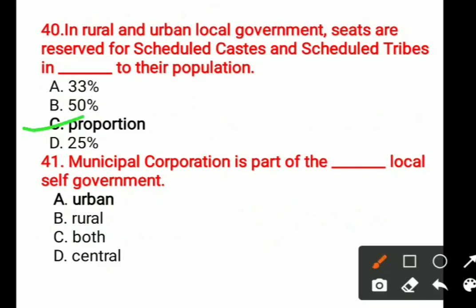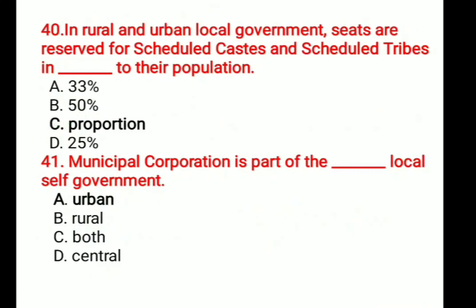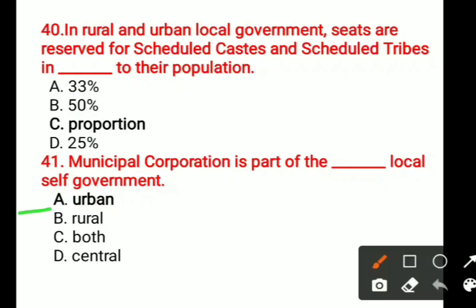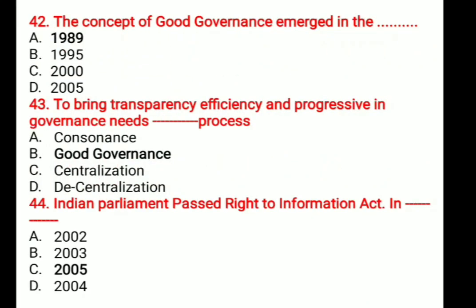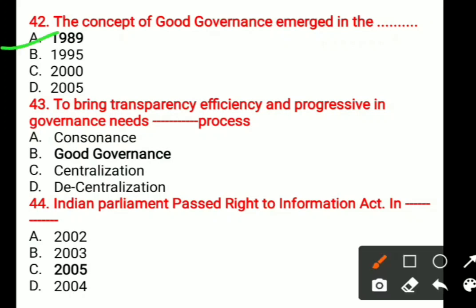Question number 41: Municipal corporation is a part of blank local self-government. Options are: Urban, Rural, Both, Central. The correct answer is Urban. Question number 42: The concept of good governance emerged in blank year. Options are: A. 1989, B. 1995, C. 2000, D. 2005. The correct answer is 1989.